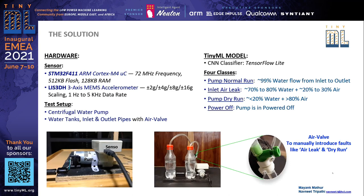What was important here was we connected an air valve to the inlet pipe so that we could create manually and repeatedly faults like air leak, dry run, etc.